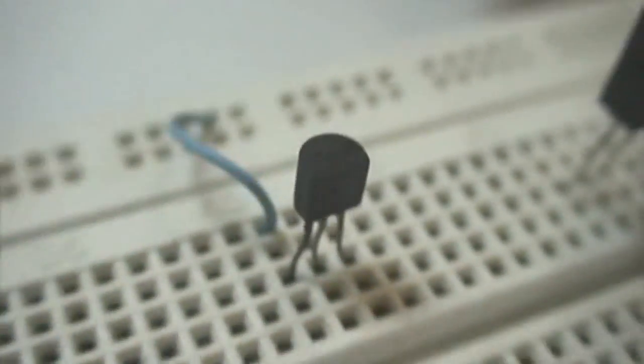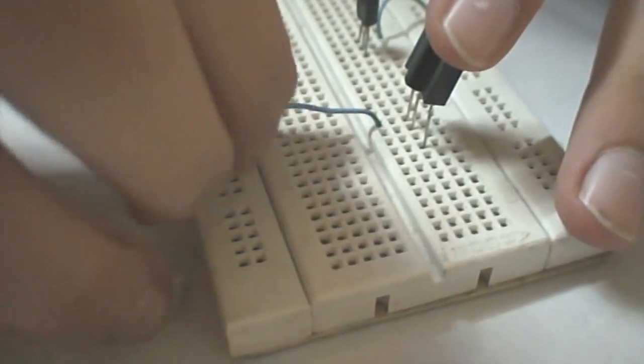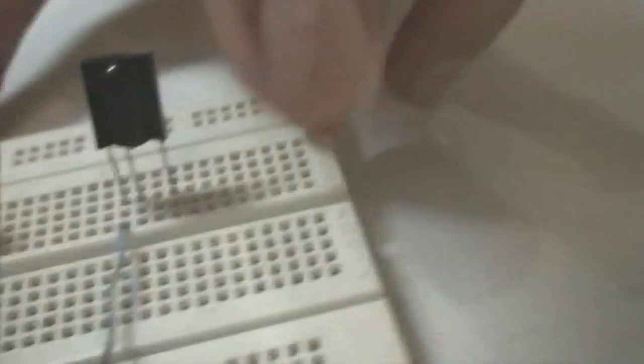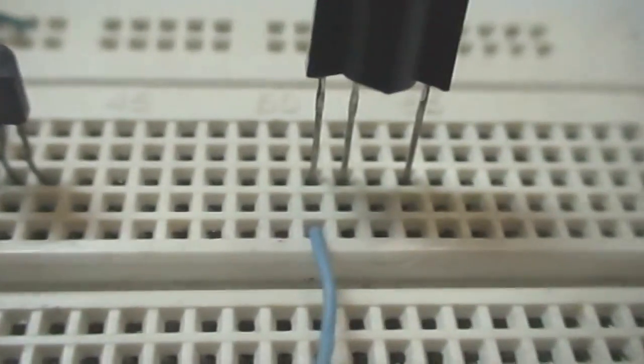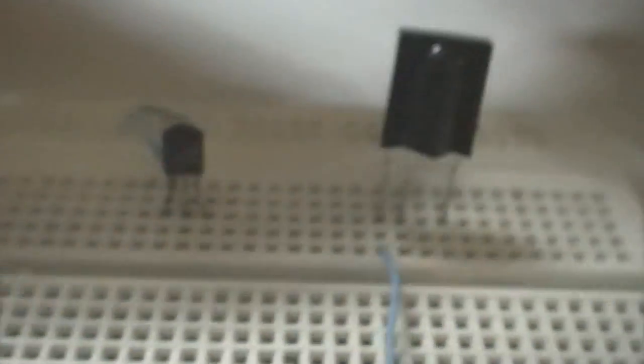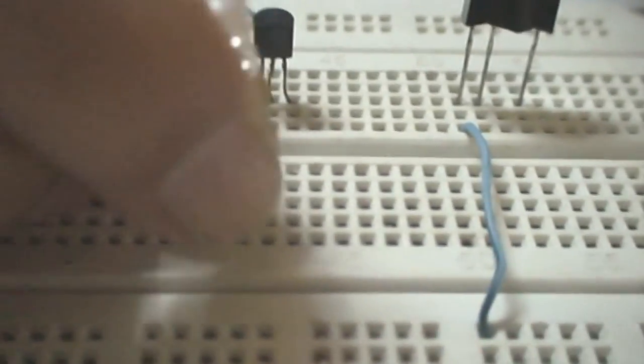We connect the ground of TSOP1738 to ground. We insert the LED on the breadboard. The longer part of the LED is the anode and the shorter part is cathode.